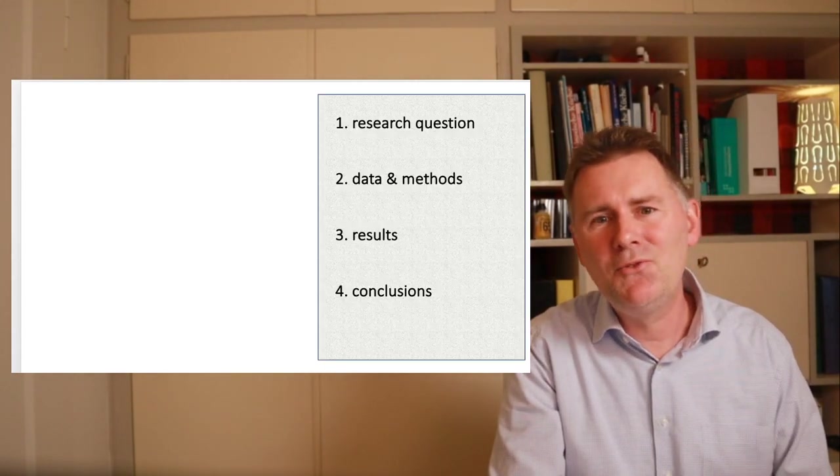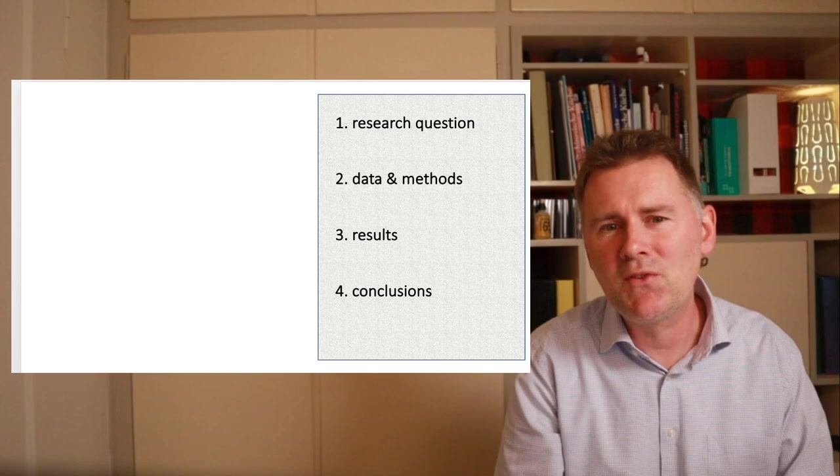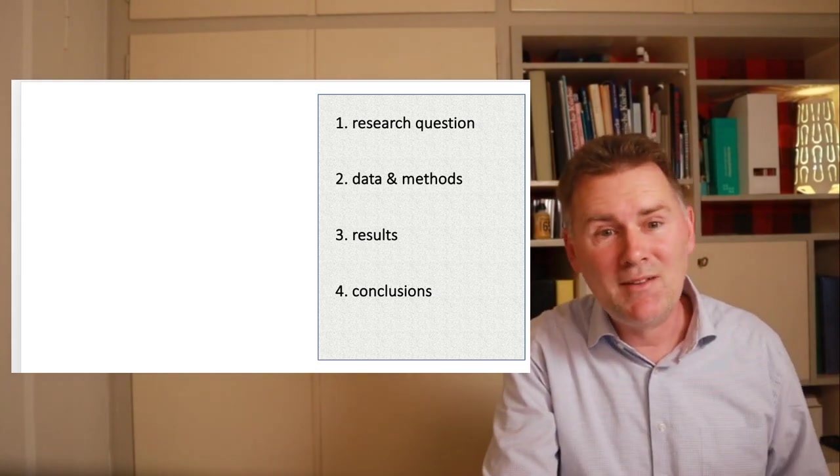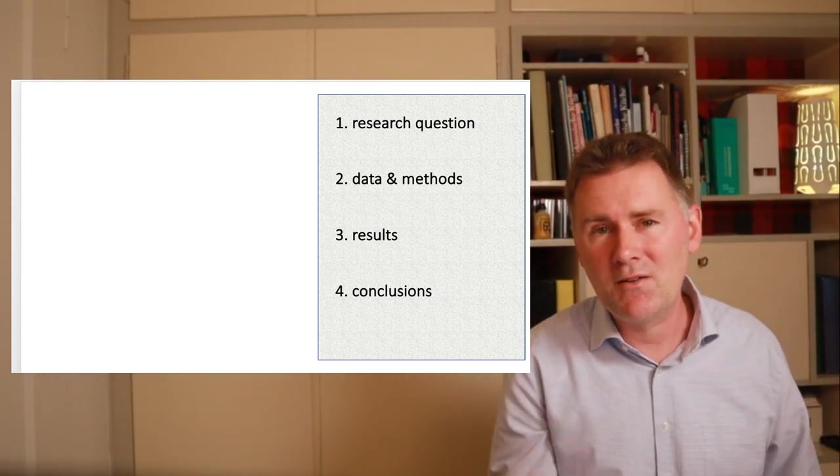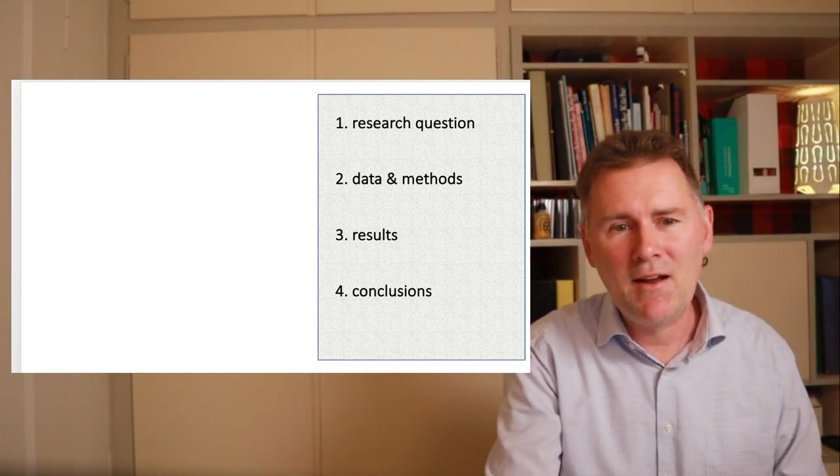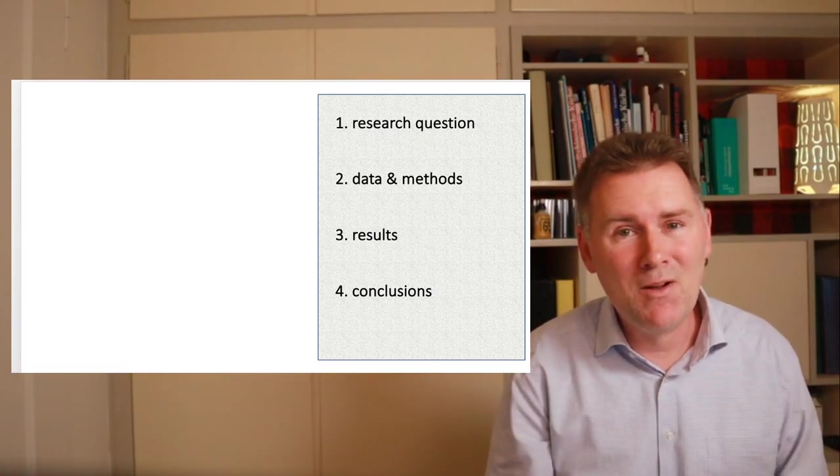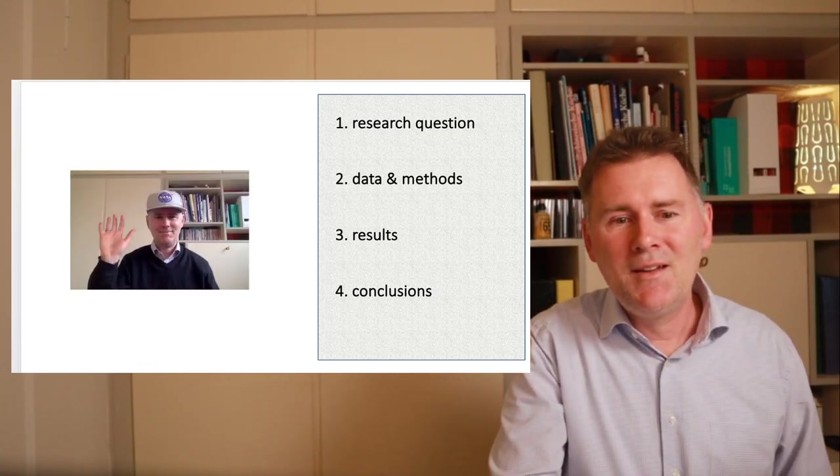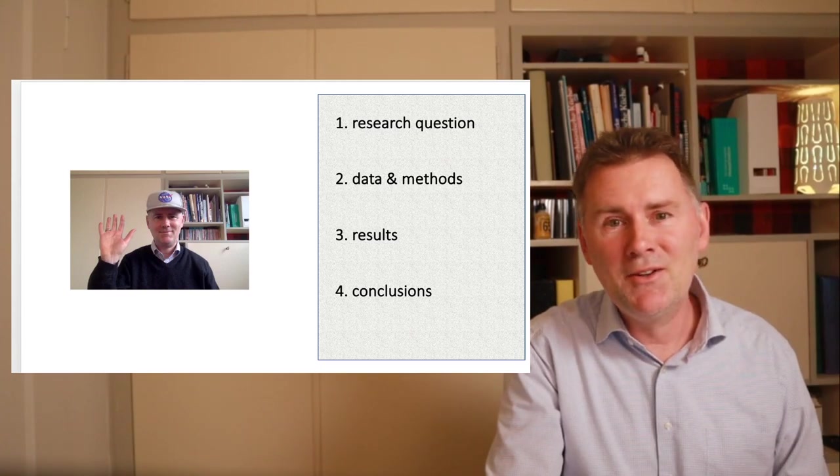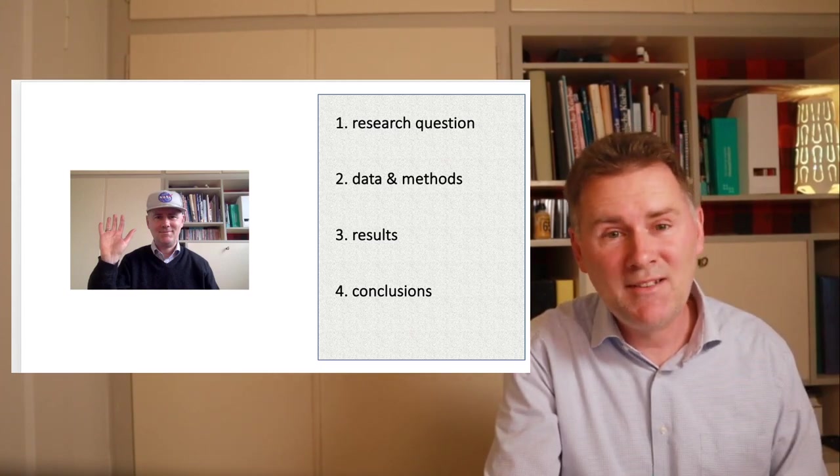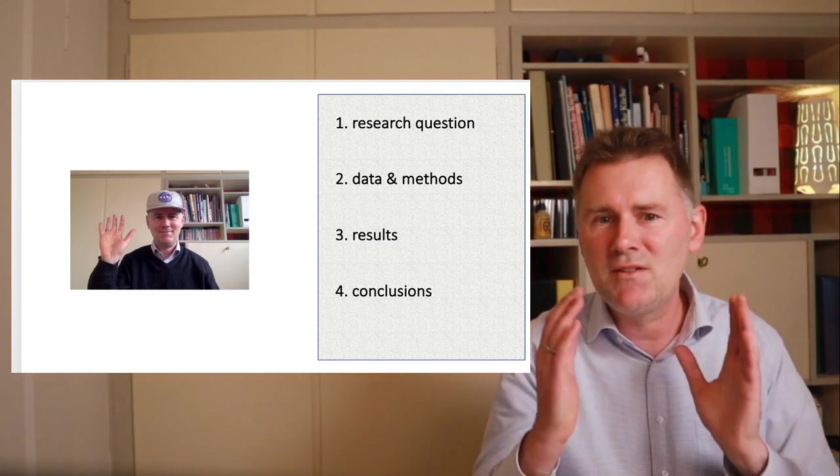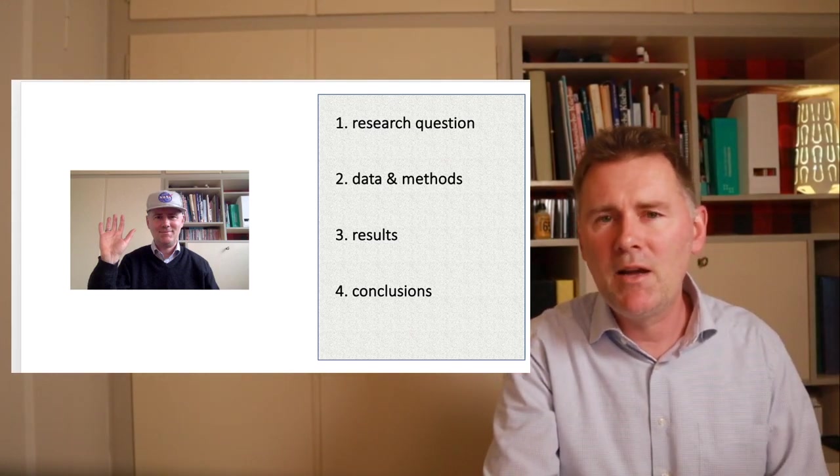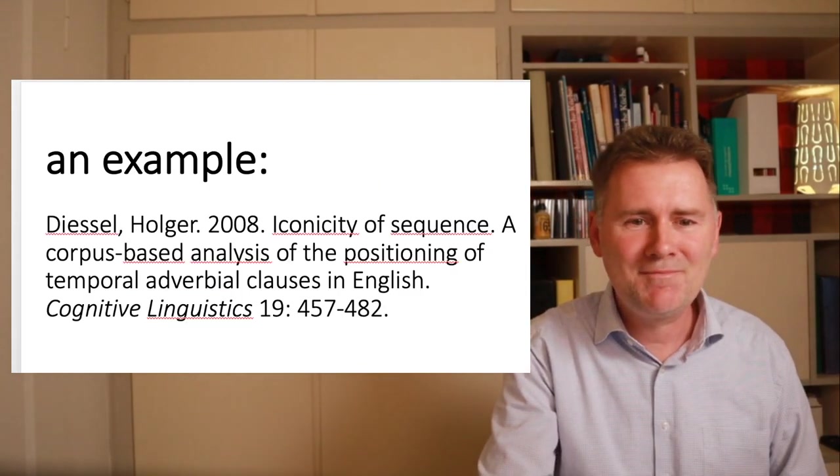So once you've read through the paper as a whole, it's time to get your notes in order. Make sure that everything fits together and that everything makes sense to you. Remember the roommate test. You want to have all four parts of the article summarized in such a way that your roommate can understand what's going on. And if something doesn't make sense to you, it won't make sense to your roommate either. Let's be honest, your roommate, you know, he's nice and all, but perhaps he's not the brightest person on the planet. So keep it simple. Research question, analytical methods, results, conclusion. You need to be able to explain all of that in simple language so that it makes sense to you and to others.